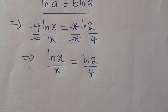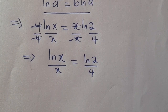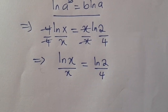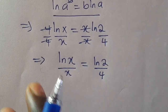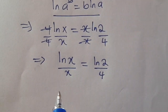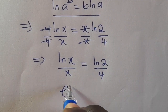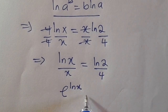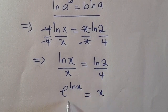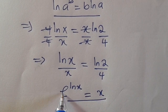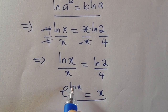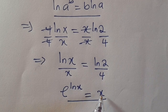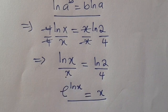So now guys, from here we have to recall that when you have e raised to ln(x), this will always give us x. Because e and ln cancel, and we are going to have our x.